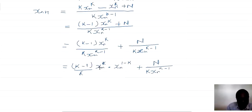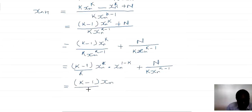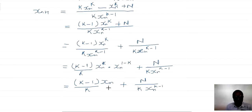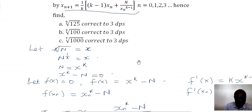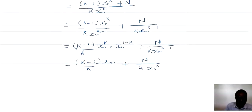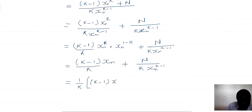We are going to work on this same base. What shall we do to the powers? We shall add. So when you add the powers here, you remain with x_n — the k's will cancel out. So we shall have (k−1)·x_n over k, plus N all over k·x_n^(k−1). Next, I'm going to pull out 1/k, which is the common factor in the denominator. So I will have 1/k into bracket: k minus 1 times x_n, plus N divided by x_n^(k−1).